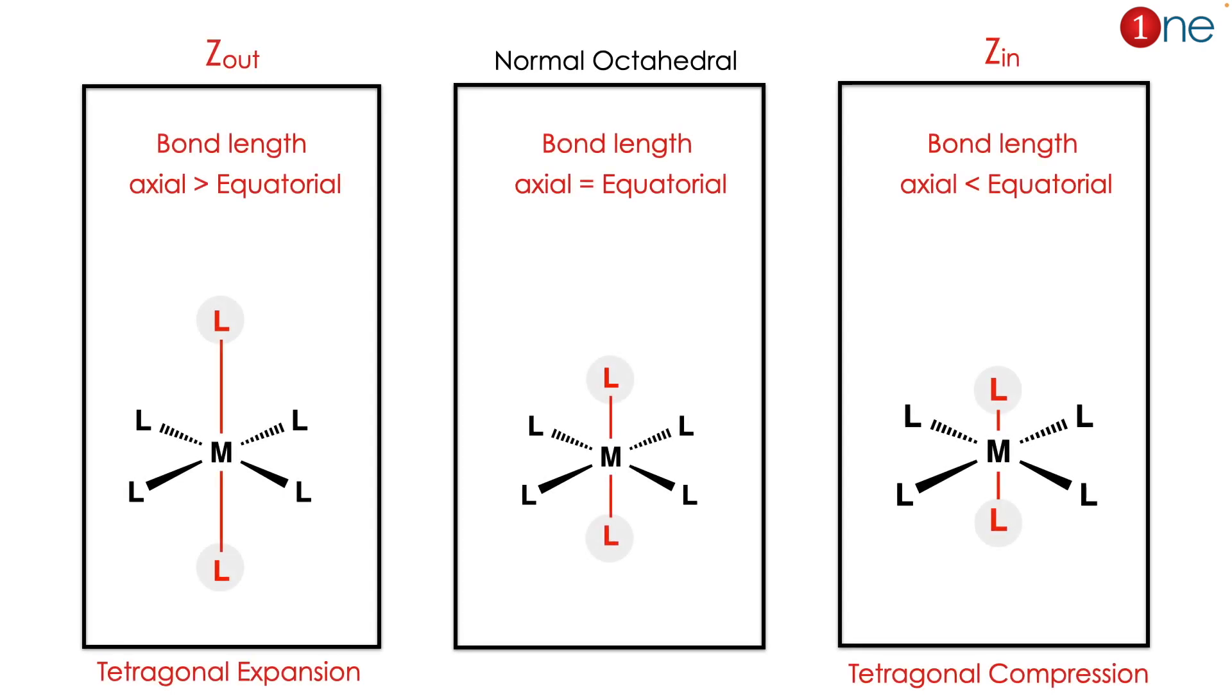In Jahn-Teller distortion, there are two kinds of distortion possible: Z_in and Z_out. The ligand in the z-axis can go outside or come near to the plane. The ligand going out means Z_out; ligand going in means Z_in.